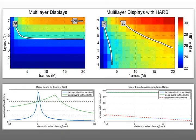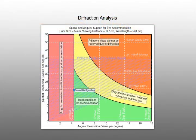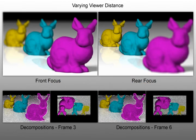In our paper, we derive upper performance bounds and provide performance simulations for Focus 3D, and show that the architecture supports moving observers over a wide viewing zone, even away from the conjugate plane of the HAR backlight.